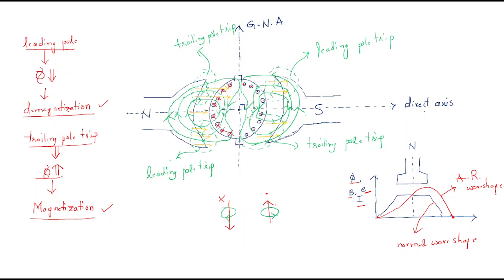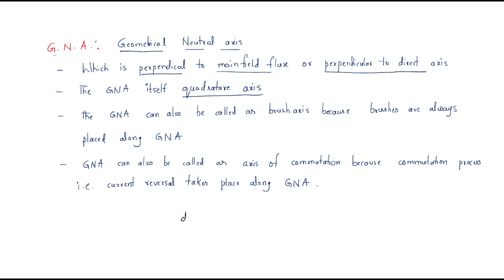The direct axis is also known as the flux axis — it is the axis between the north pole and south pole. If there are two poles, there is one direct axis; if there are four poles, we have two north poles and two south poles, giving us two direct axes. The axis perpendicular to these is called the quadrature axis.